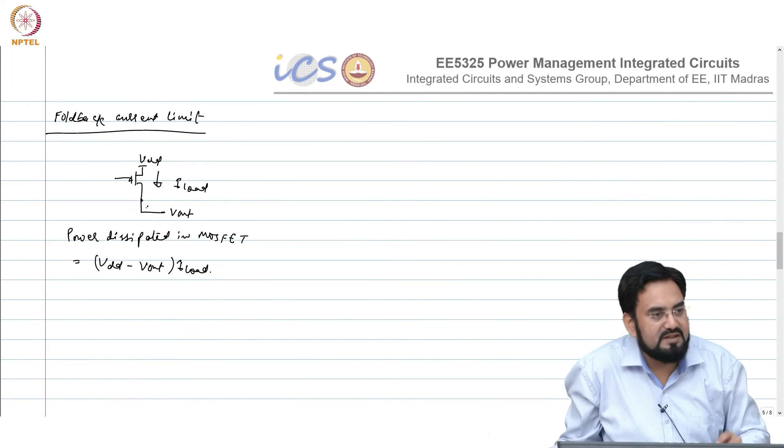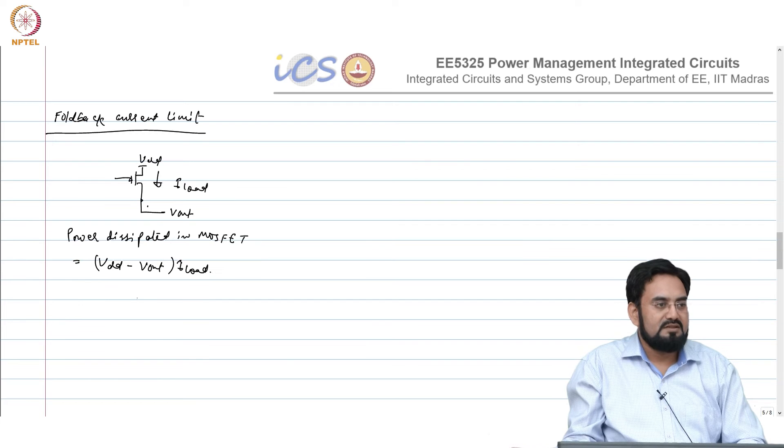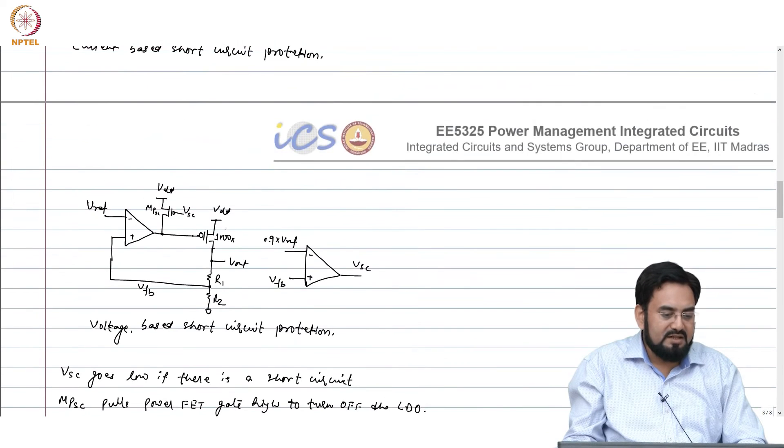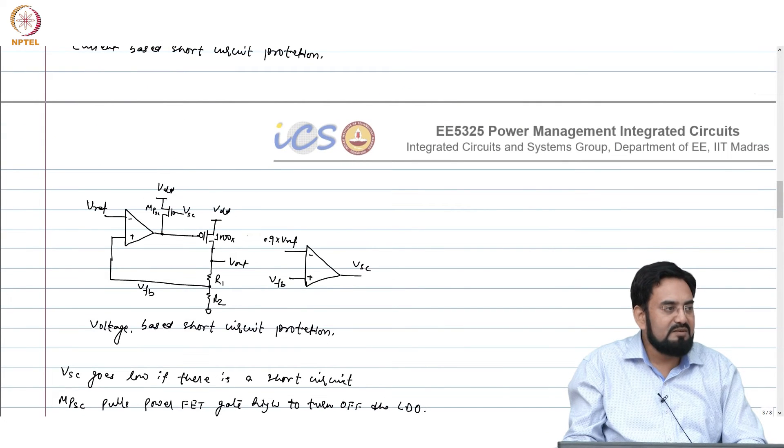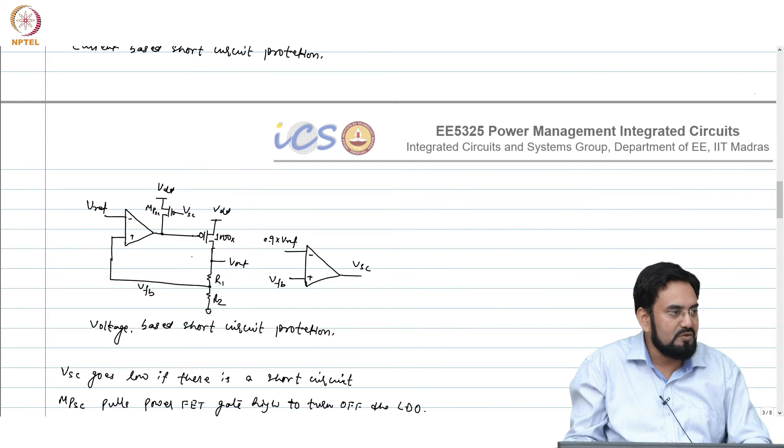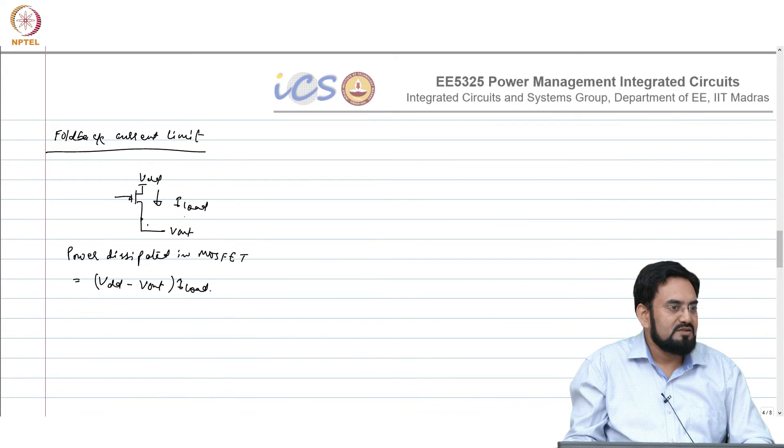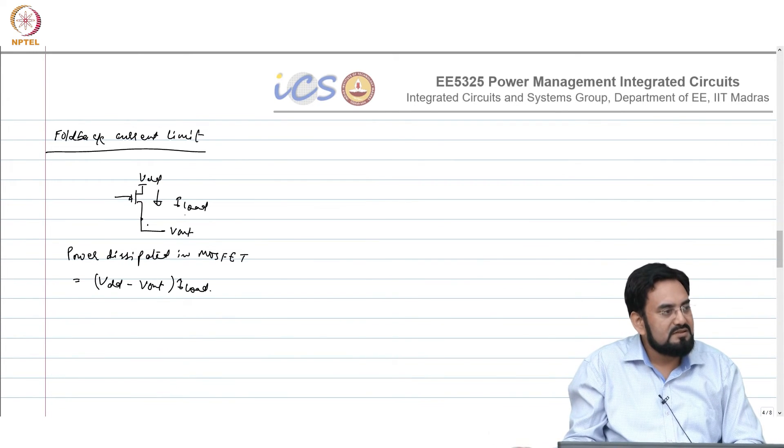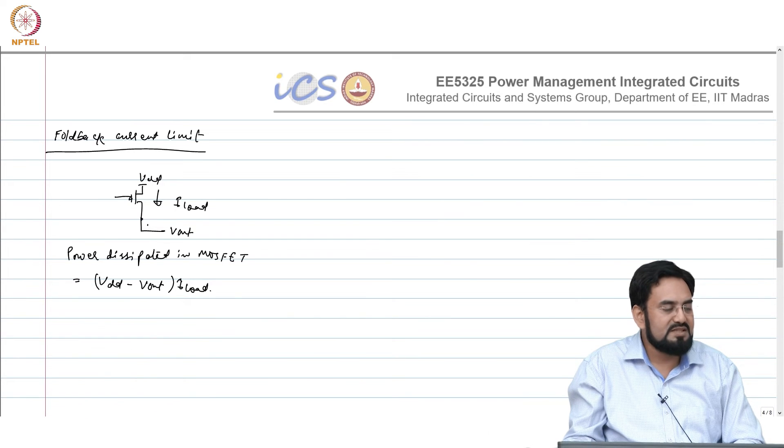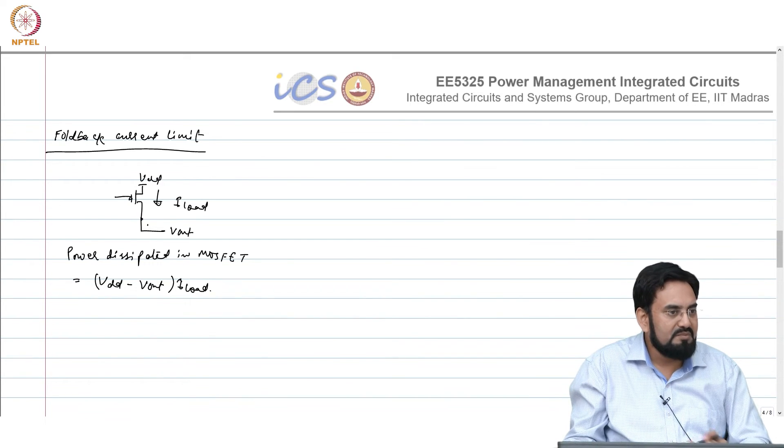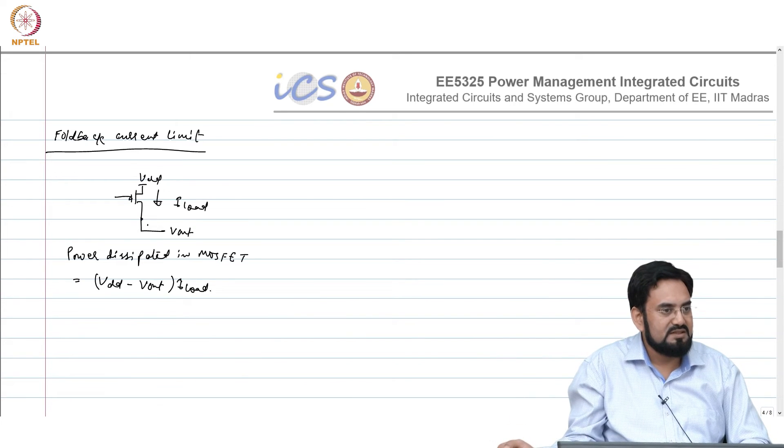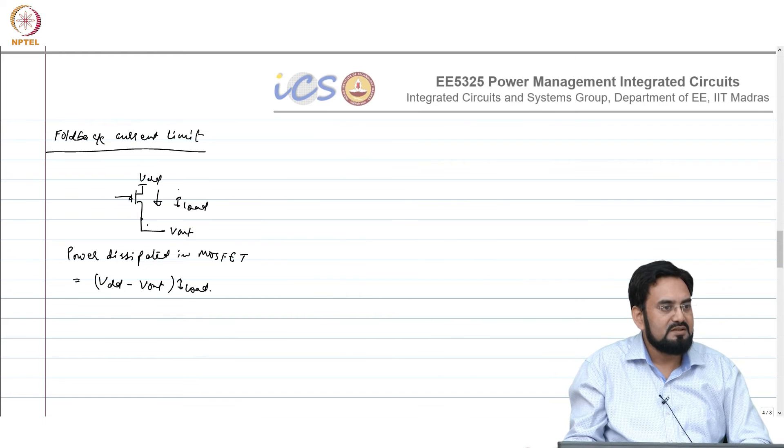But let us say you have a short circuit. With the short circuit what you are trying, you are trying to limit the MOSFET current to 2 milliamp or so, but what happened to the V ds? V ds is increased here. What will happen to the power dissipation? Let us say in the normal condition your V ds was 100 millivolt, 1 milliamp. What is your power dissipation in that case?